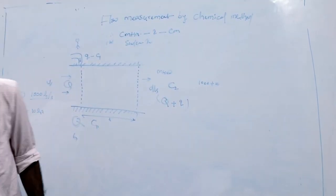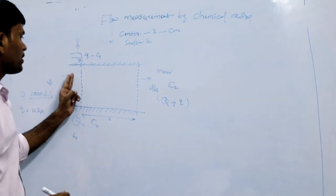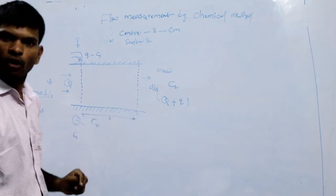Based on the continuity equation, we can say that the amount of inflow equals the amount of outflow. C naught times Q plus C1 times small q equals C2 times (Q plus small q).